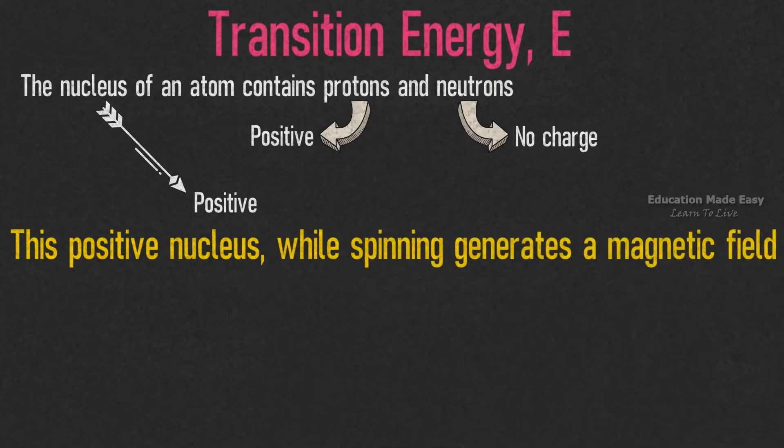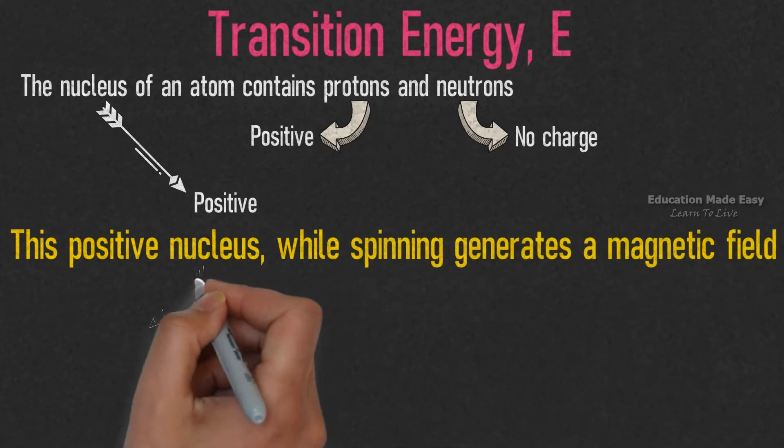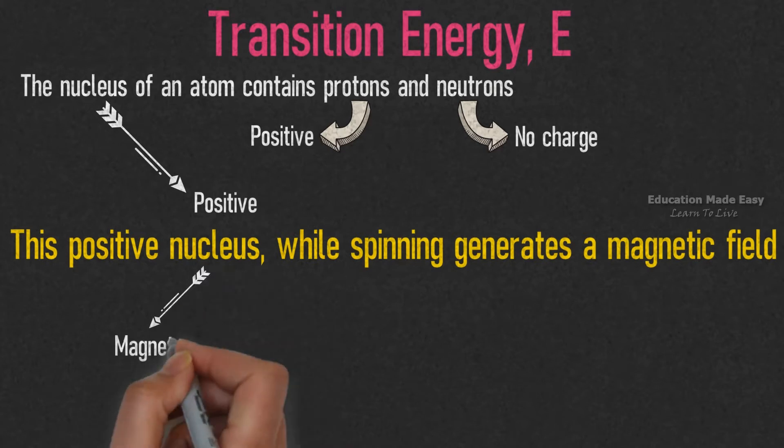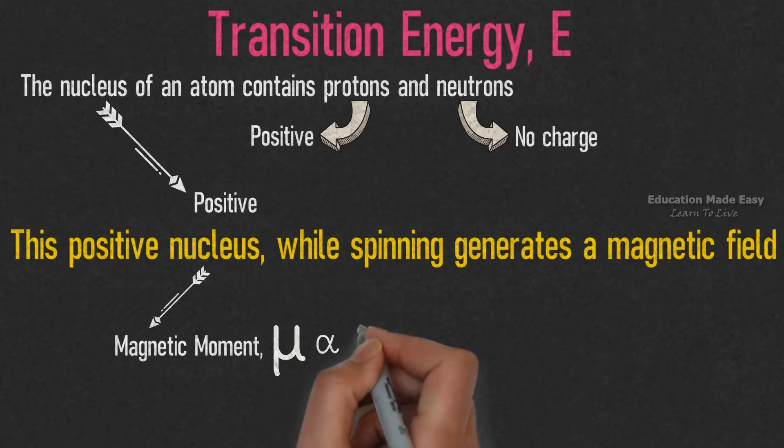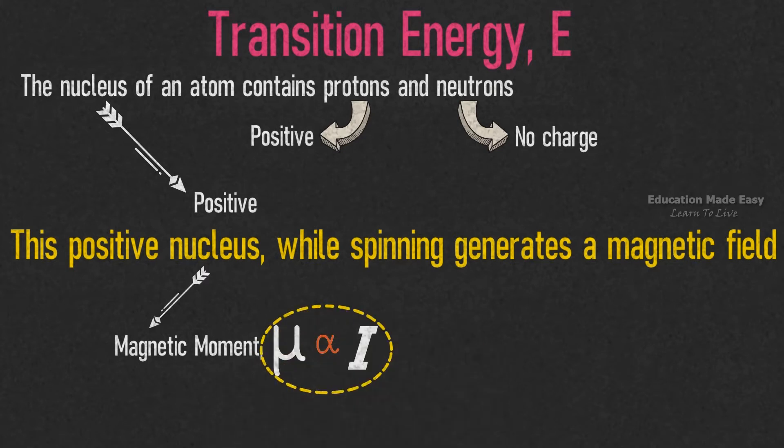This means the nucleus will be having a magnetic moment denoted by μ, and it is directly proportional to the nucleus spin I. Let us remove the proportionality by adding some constants.